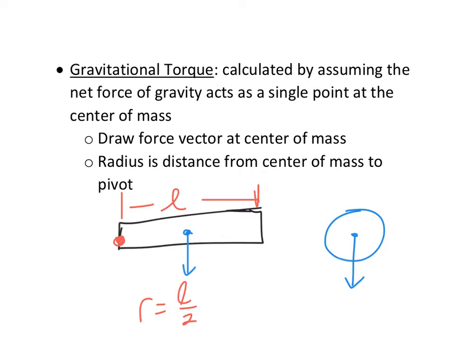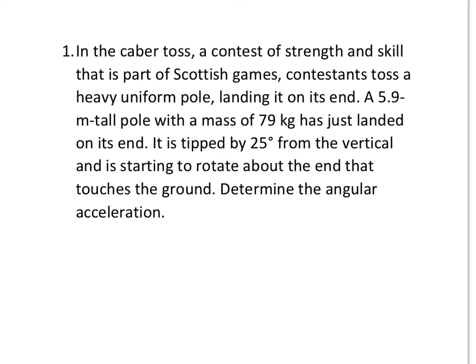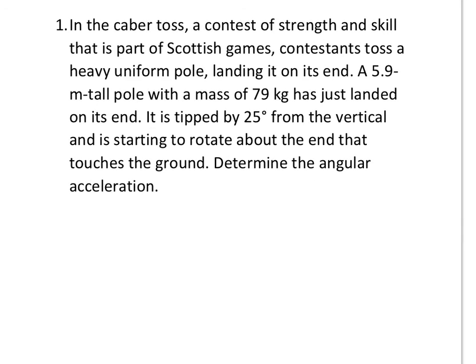I'm going to do two examples just showing how gravitational torque would work in a problem. If you feel comfortable after the first one, then as always you don't need to watch the second. So in the caber toss, which is a contest of strength and skill that is part of Scottish games, contestants toss a heavy uniform pole, landing it on its end. A 5.9 meter tall pole with a mass of 79 kilograms has just landed on its end. It is tipped by 25 degrees from the vertical and is starting to rotate about the end that touches the ground. Determine the angular acceleration.